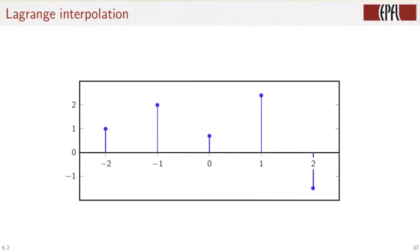Let us return to our problem of interpolating five samples between minus 2 and plus 2. We can now do this by writing the solution as the linear combination of Lagrange interpolators weighted by the sample values.